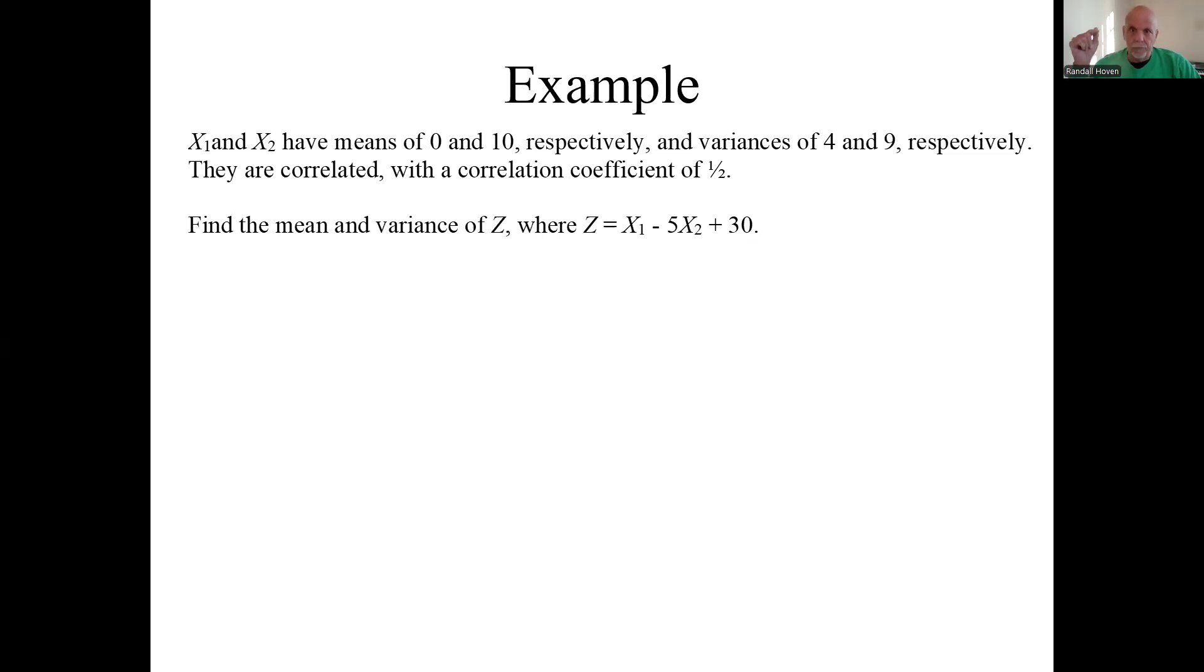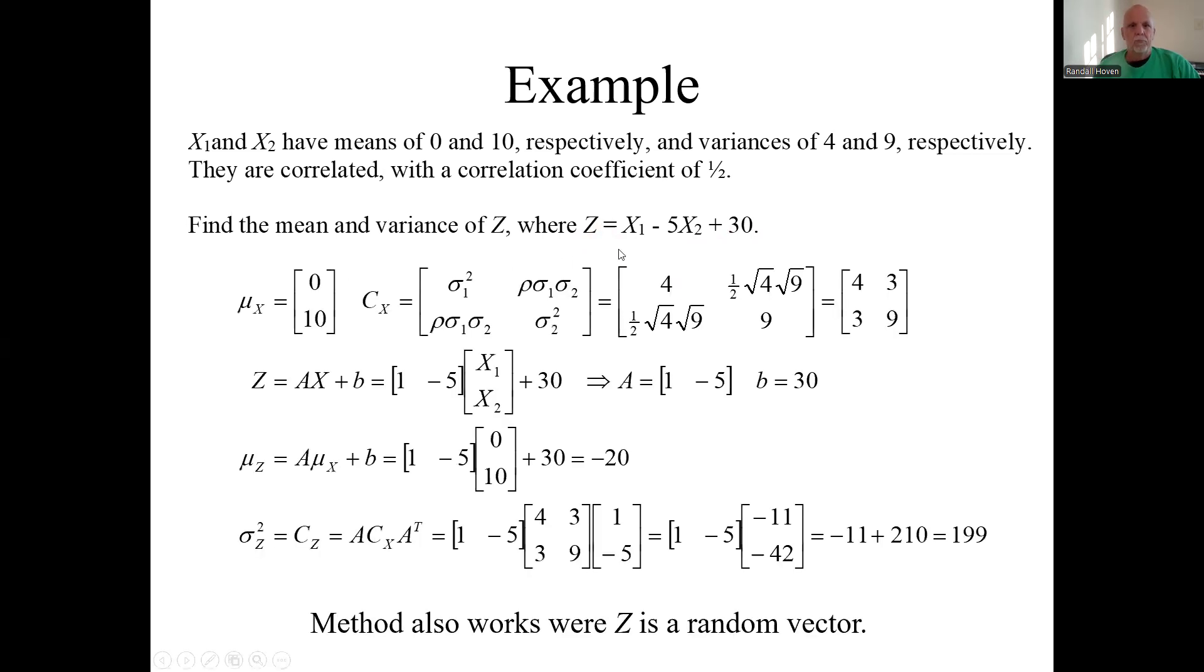Find the mean and covariance of Z where Z is this. A convenient way to do this is to use that formula for matrices. Even though this Z is going to be just a scalar, just a single random variable, it's best to treat it as a vector. We're going to write this in matrix form: Z equals AX plus b. A is just 1 and -5. A is a matrix, but it's a 1 by 2. Here's the random vector, and b is another scalar, it's just 30.